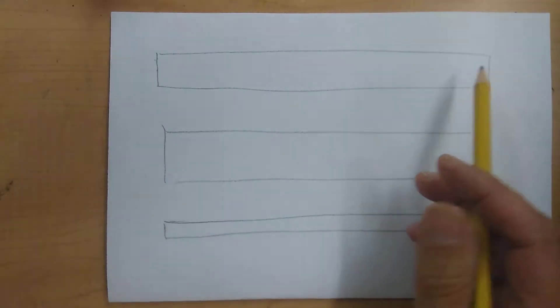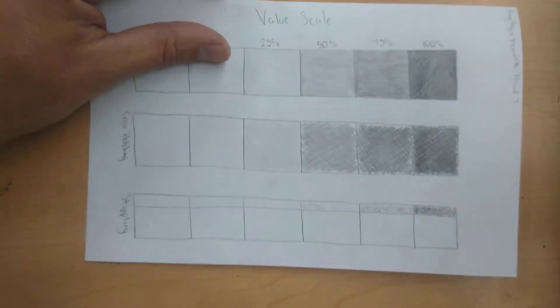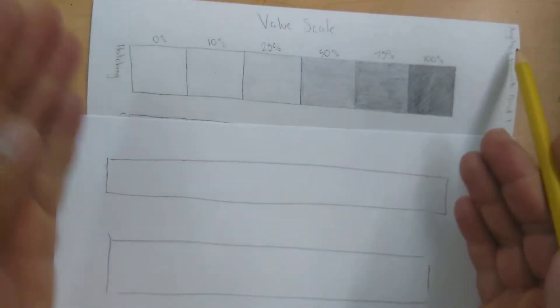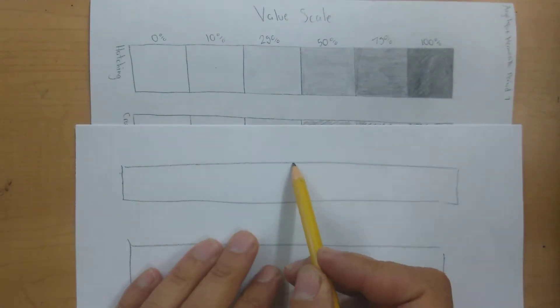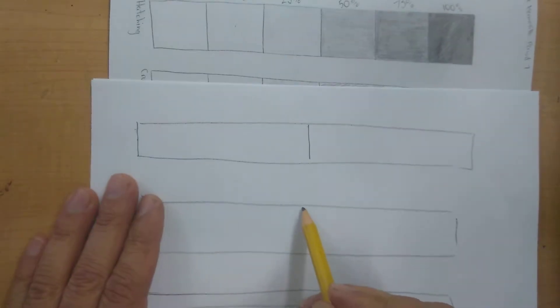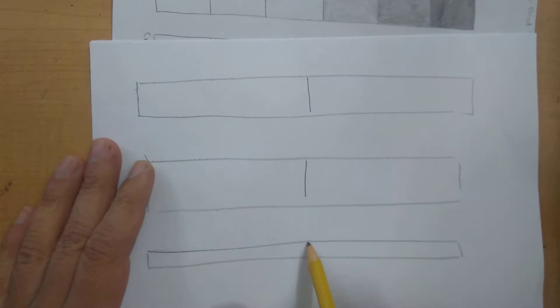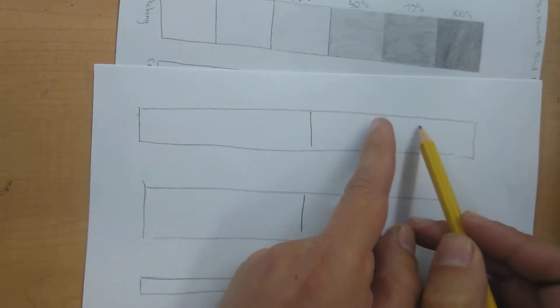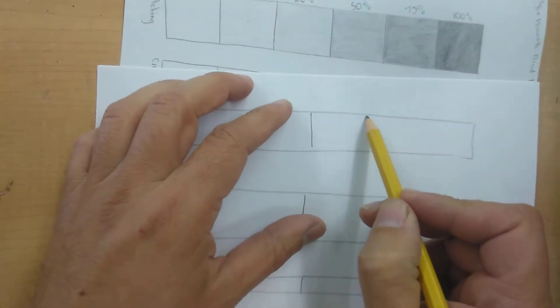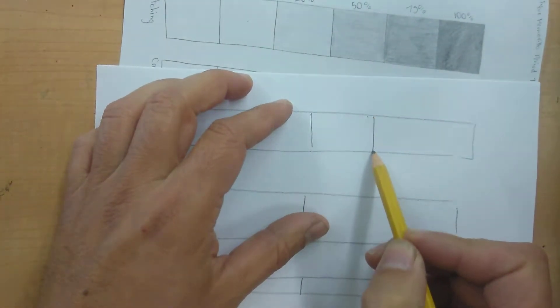Okay, to go ahead and make your value scales, what we're going to do is we want to find the middle. So going with the middle of this one, you can go ahead and bring that line down for your other ones. And then for this section right here, we can split it up in two or three sections by making two lines.